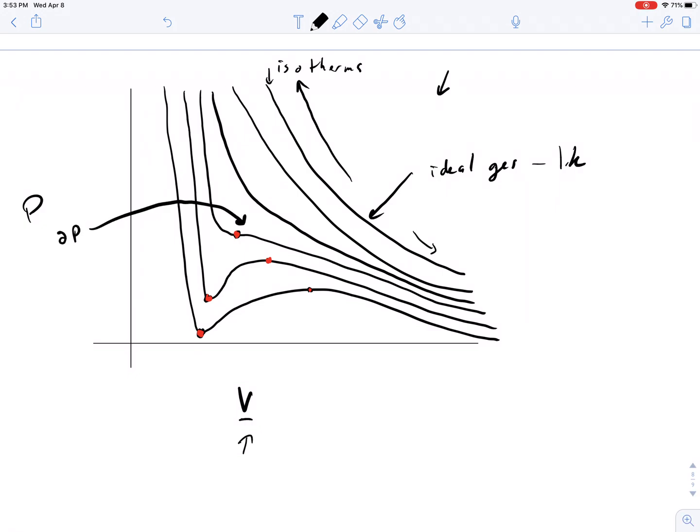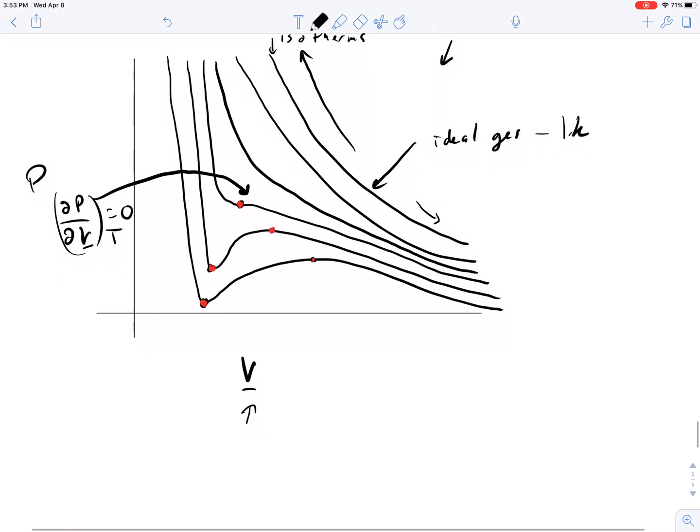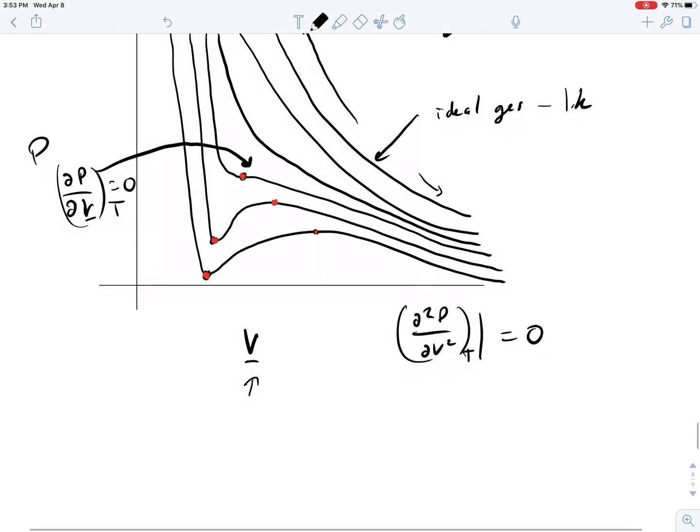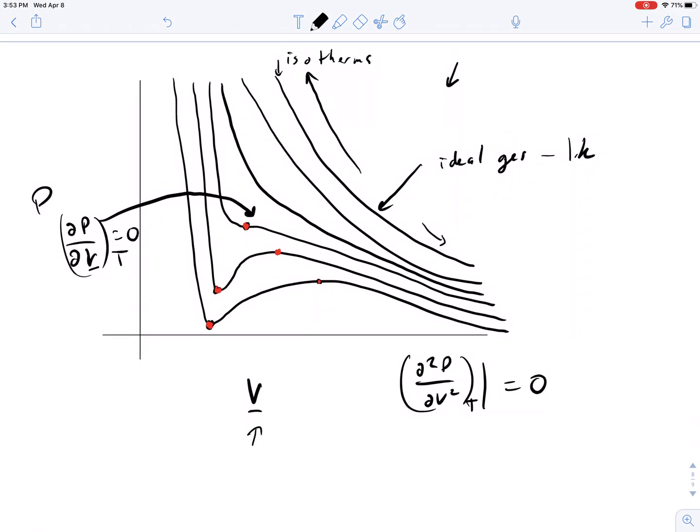Where the change in pressure over specific volume at an isotherm at constant T equals zero at those points. There's another set of points on here where the second derivative also becomes zero at constant temperature. And by looking at these different regions of this behavior, you can start to understand what's happening.